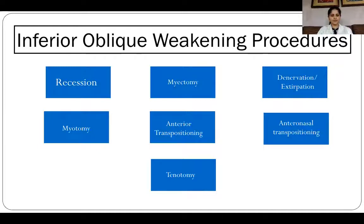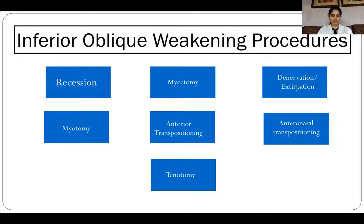Grade 1 does not require any weakening procedure. Grade 2 and 3 can be corrected by recession, while grade 4 requires antero-transpositioning, and if severe extortion is present then antero-nasal transpositioning is the procedure of choice. However, inferior oblique recession is preferred to disinsertion, myectomy, and myotomy by many surgeons because of the ability to achieve a graded response and the lower risk of unpredictable reattachment of the inferior oblique muscle to the sclera.